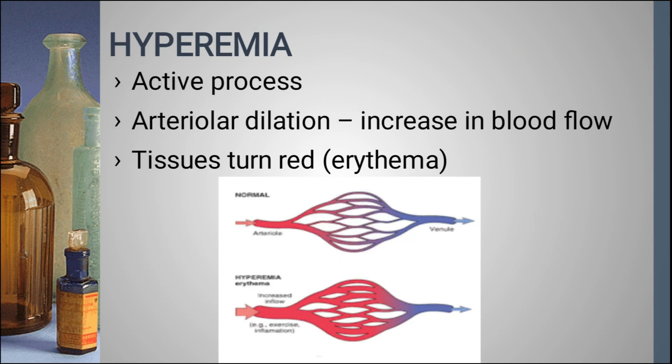Hyperemia is an active process. In hyperemia, arteries get dilated — for example, in skeletal muscle during exercise or at the site of inflammation. When the artery is dilated, there is an increase in blood flow to the tissues. When blood flow to the tissue is increased, the tissue turns red — that is, erythema is produced.